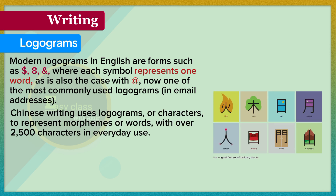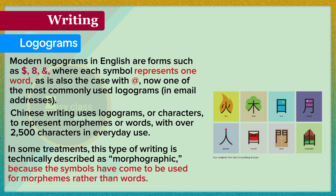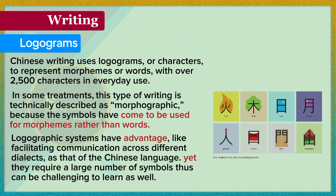Chinese writing uses logograms, or characters, to represent morphemes or words, with over 2,500 characters in everyday use. In some treatments, this type of writing is technically described as morphographic, because the symbols have come to be used for morphemes rather than words. Logographic systems have advantages, like facilitating communication across different dialects as in the Chinese language, yet they require a large number of symbols, and can be challenging to learn.